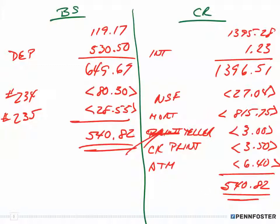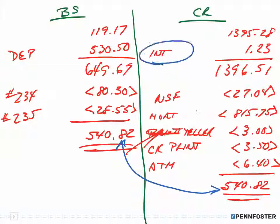That matches my reconciled bank statement balance of $540.82, so I know this is correct. The only thing left is to go back to my check register and enter the interest, the NSF charge, the mortgage, the teller fee, the check printing fee, and the ATM fee. When I write those into my check register and calculate the balance, my final balance should be $540.82. That's it for that one — see you in the next video for problem 4-9.